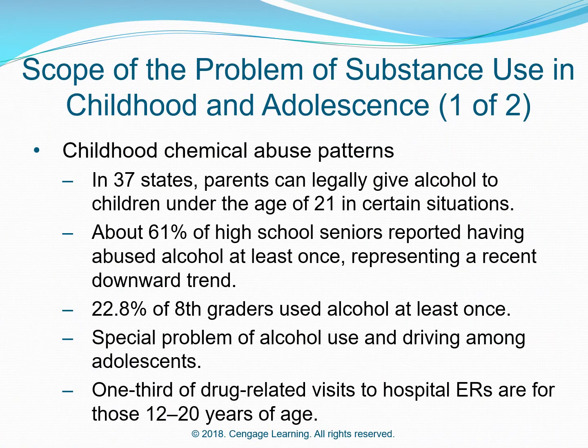Scope of the Problem of Substance Use in Childhood and Adolescents: Childhood Chemical Abuse Patterns. In 37 states, parents can legally give alcohol to children under the age of 21 in certain situations. About 61% of high school seniors reported having abused alcohol at least once, representing a recent downward trend. 22.8% of 8th grade students had used alcohol at least once.